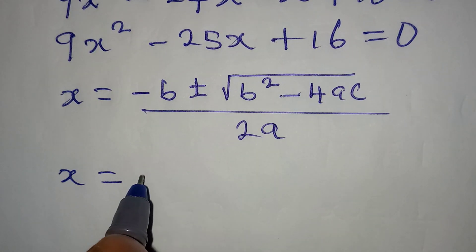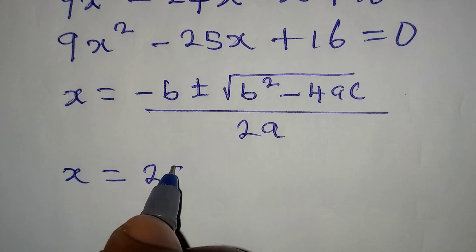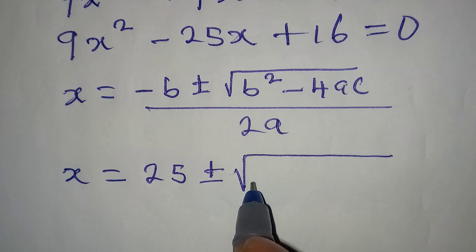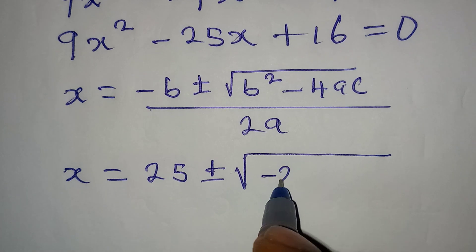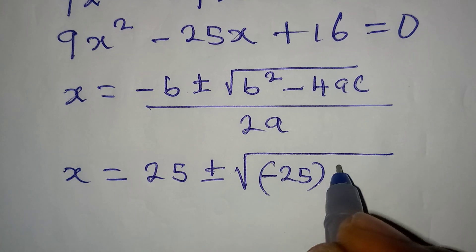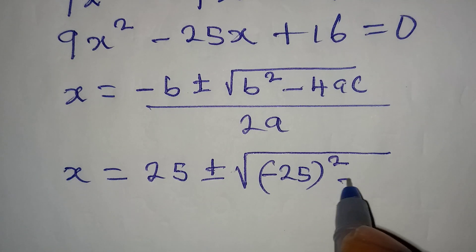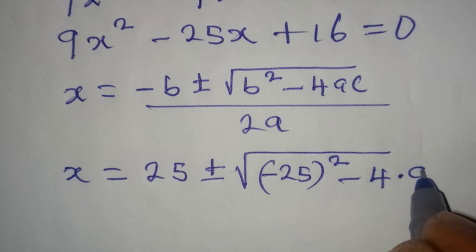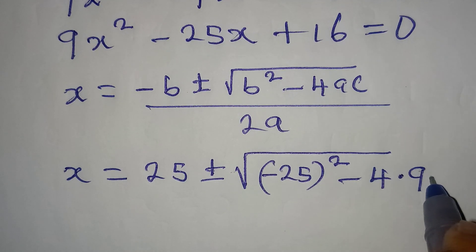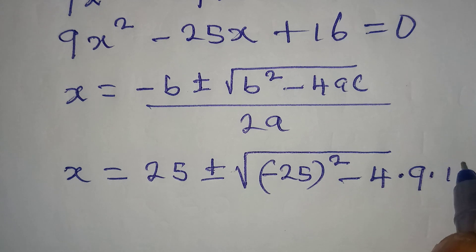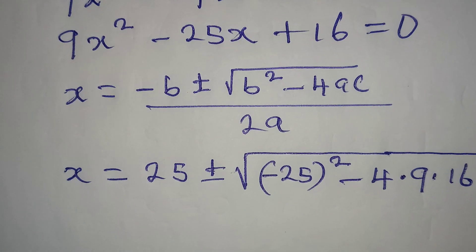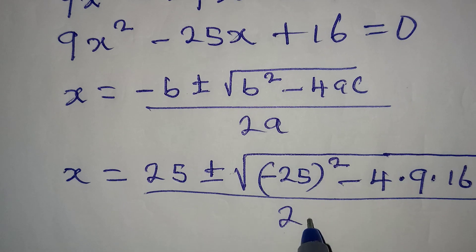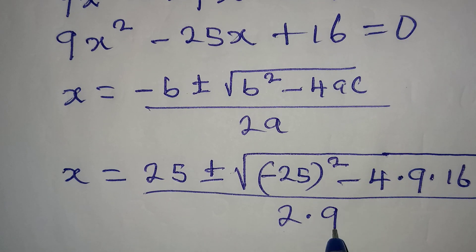So x becomes minus minus 25, which gives plus 25, plus or minus square root of minus 25 squared minus 4 times a, which is 9, times c, which is 16, all over 2 times 9.